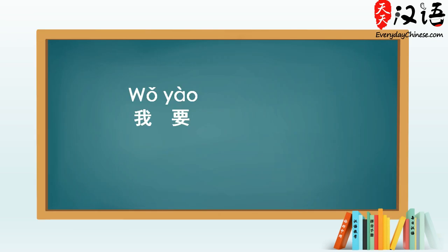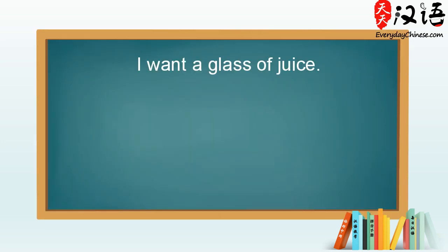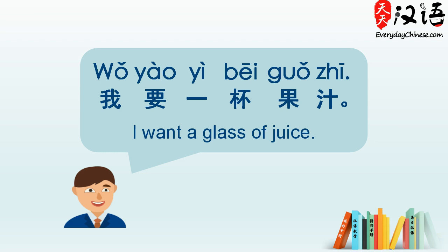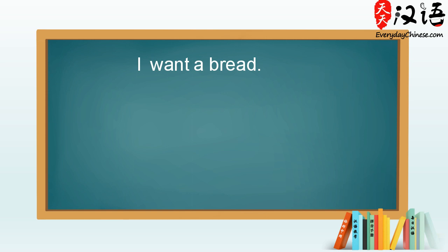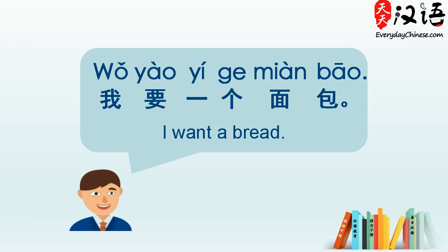我要 is quite a useful pattern which you can use plus a noun or a verb to make a request. For example, juice is 果汁 — I want a glass of juice: 我要一杯果汁. Bread is 面包 — I want a bread: 我要一个面包.